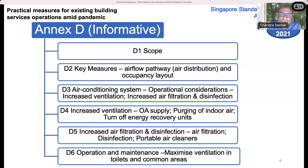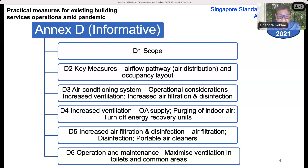We talked about air distribution pathways, airflow pathways, and occupancy layout. In terms of operational considerations of the air conditioning system, we said we have to increase the ventilation, increase air filtration and disinfection where possible. For increased ventilation, we increased outdoor air supply, purging of indoor air, and turning off energy recovery — strategies that were discussed in previous presentations as well. The operation and maintenance part focused on maximizing ventilation in toilets and common areas to ensure good circulation and ventilation throughout buildings.